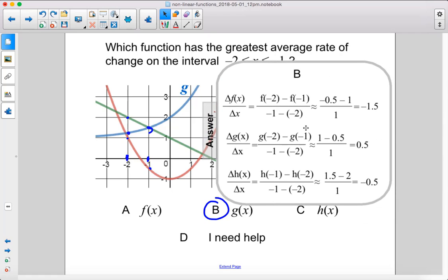As you can see, when you plug in all the numbers into the average rate of change formulas, we get that g(x) is the only one that's not negative. See how visually the red and green graphs are negative - they're decreasing, whereas g(x) is increasing.